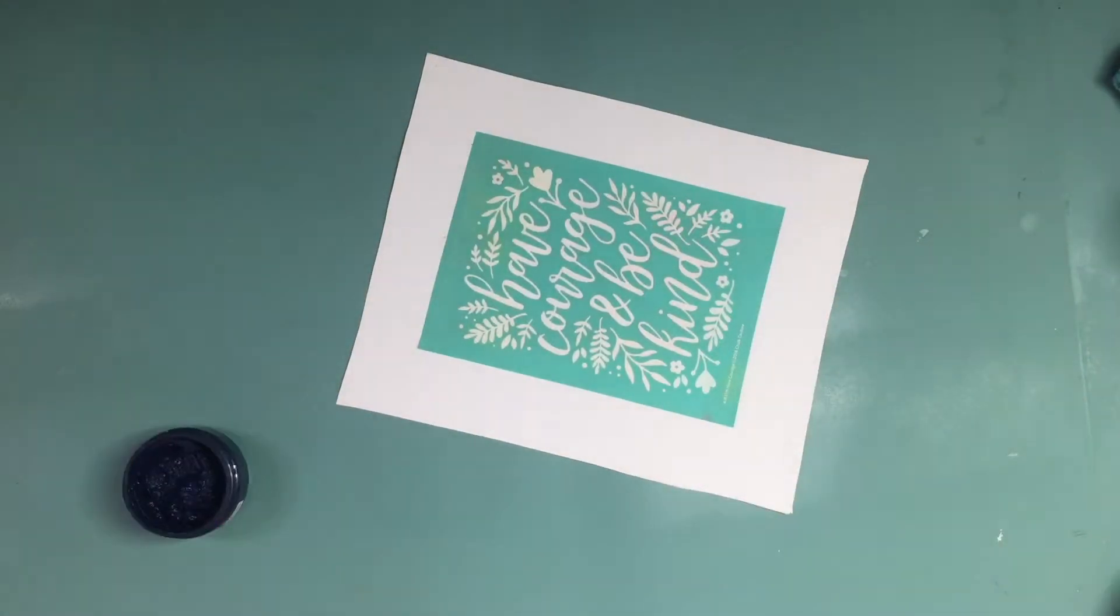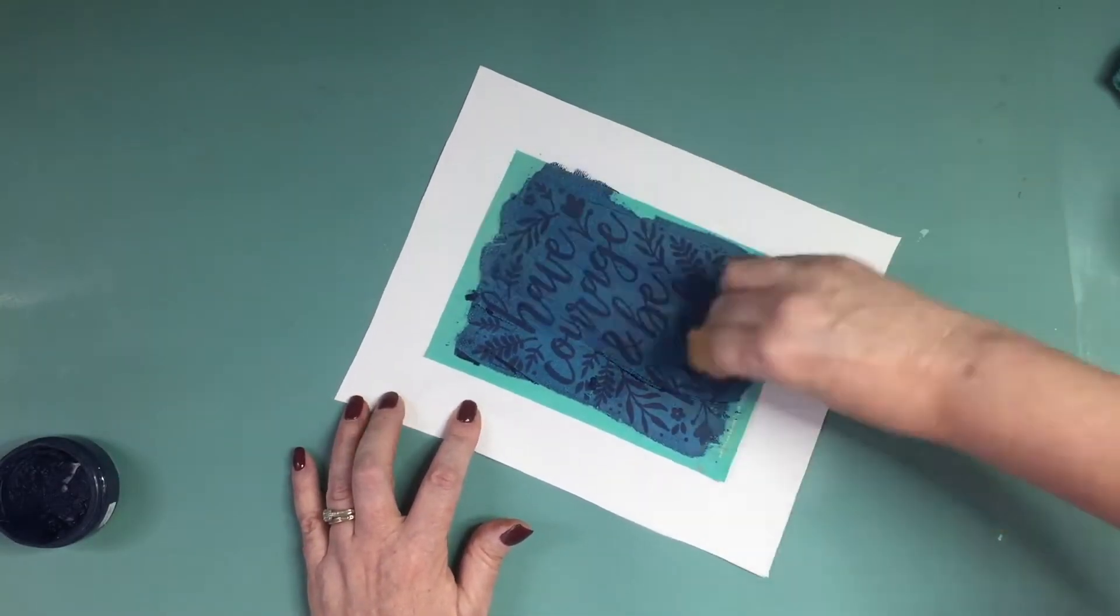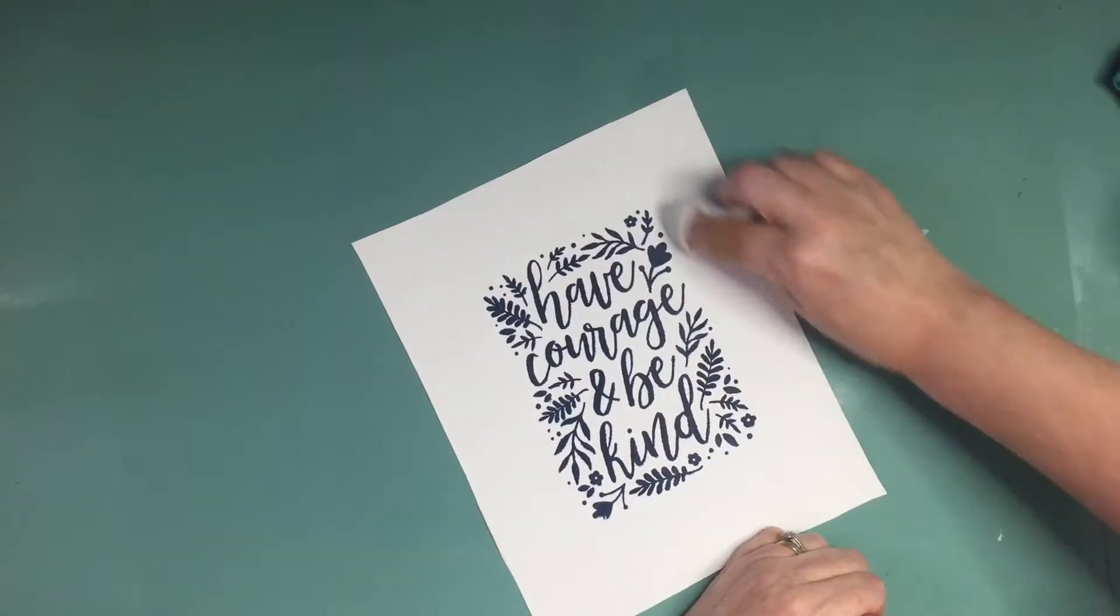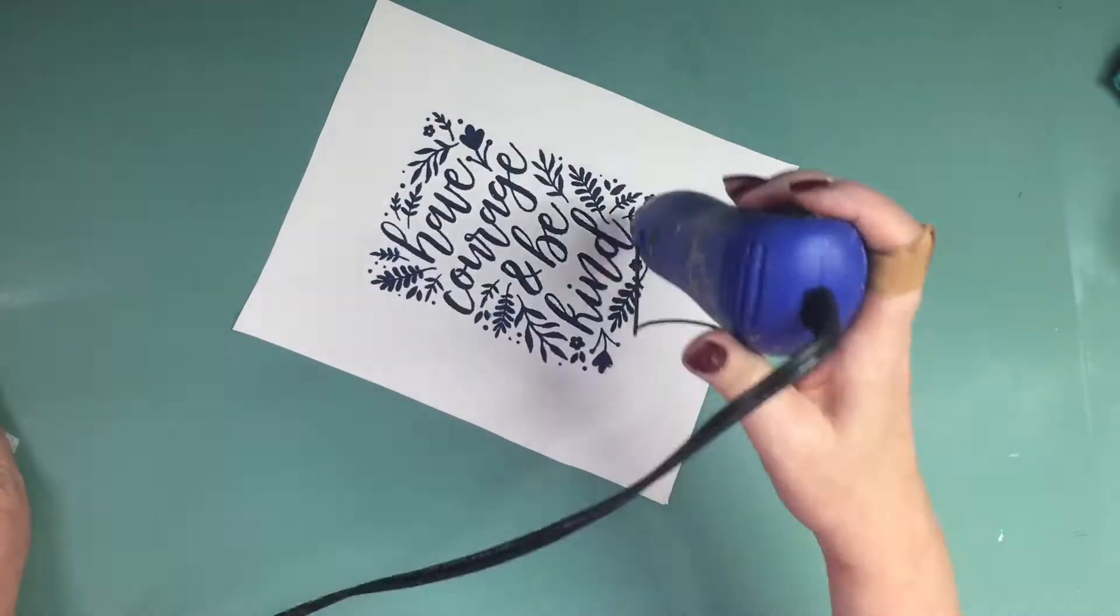Then on your canvas piece here's where we're going to do our chalk couture. You can paint this canvas piece ahead of time. You can do all sorts of things but the point of the tutorial is to show you how to do a reverse canvas.